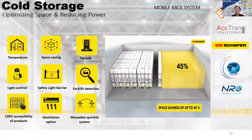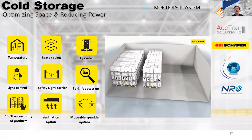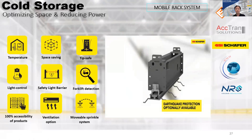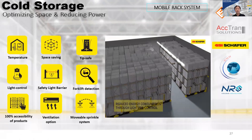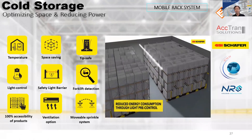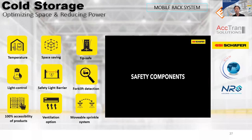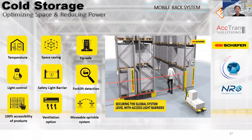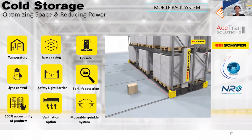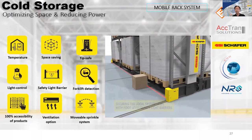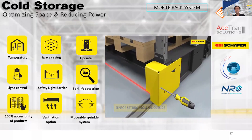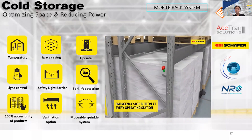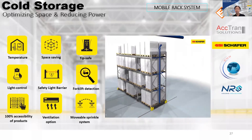Compared to a traditional selective racking system, mobile racking has the potential to save space of up to 45 percent, which increases storage capacity of up to 90 percent depending on your room size. Reactive activation of the lighting system — like in this video — reduces energy consumption, with lighting controlled to switch on only when an aisle is open instead of the entire room. Devices such as safety light barriers and emergency stop buttons are incorporated so that the operator will not be trapped within a moving rack.